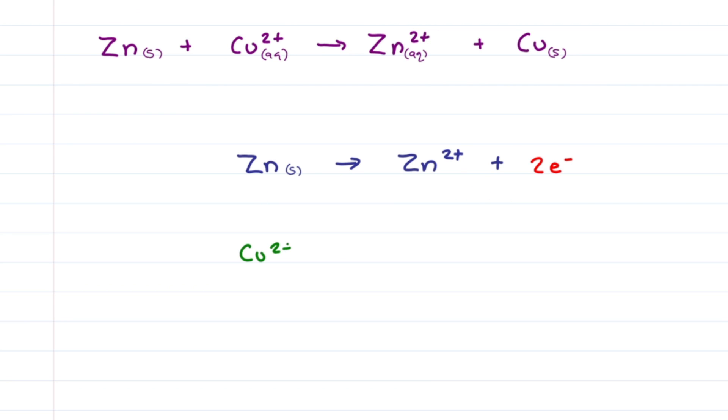For the copper half reaction, we have Cu2+ goes to Cu solid, which means we have to have two electrons on the left. Once again, for a net charge of zero on both sides.